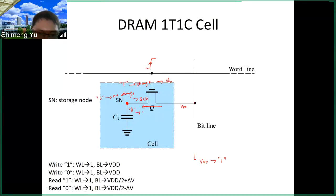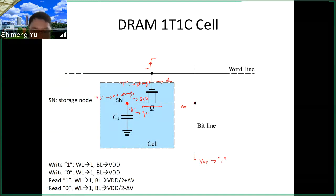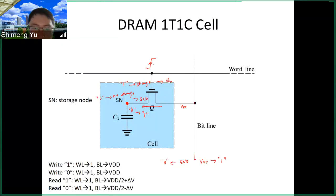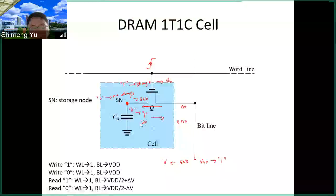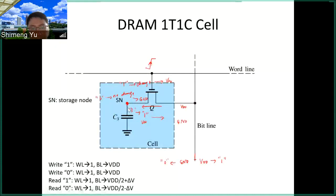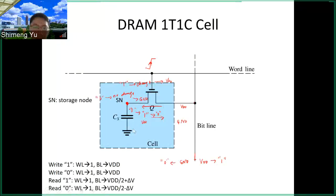If you want to write zero, assuming you currently have one stored, you ground the bitline to prepare zero. Then you turn on the wordline to turn on this bridge. Now the current flow reverses direction — flowing toward the right — and this discharges the capacitor. Charge is extracted from the capacitor plate, and eventually the storage node voltage goes to ground. Then the data is written to zero. This is how you write data into the DRAM cell.